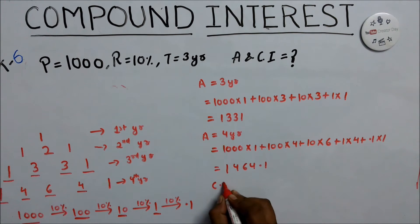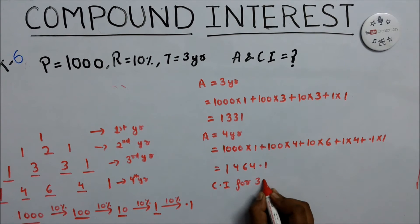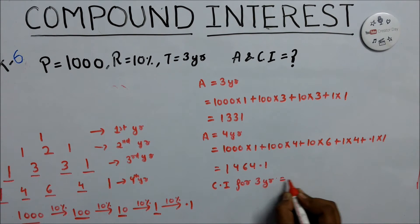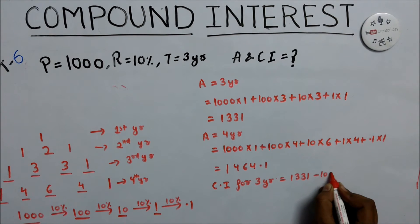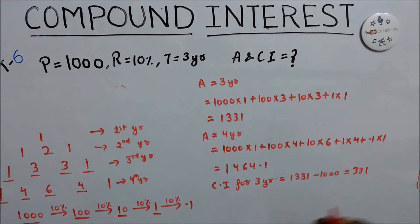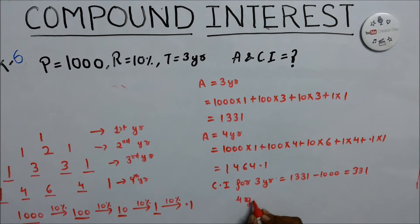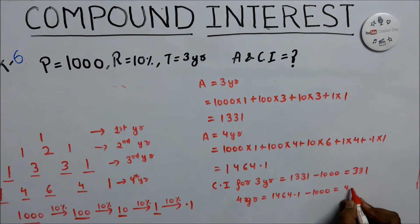Compound interest for 3 years equals 1331 minus 1000, which equals 331. For 4 years, the amount is 1464.1, so compound interest for 4 years equals 1464.1 minus 1000, which equals 464.1.